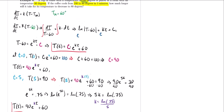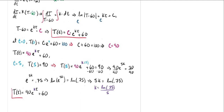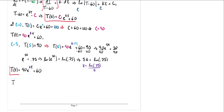Now let's finish the problem. We want to find how long it takes the temperature to reach 80 degrees. Note that the problem asks how much longer after the first 5 minutes. Setting T(t) = 80 and solving, we get t ≈ 12.047 minutes total.